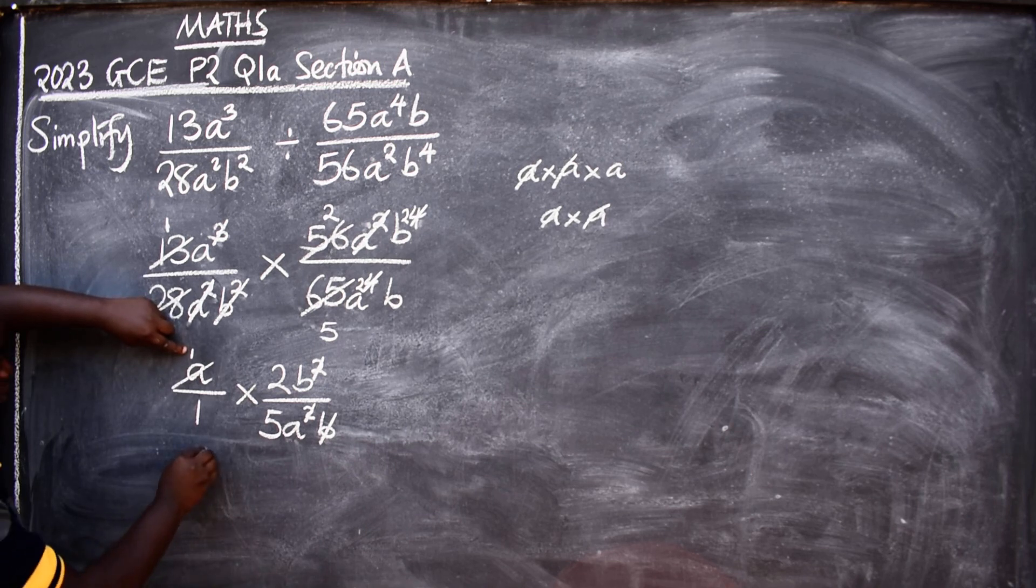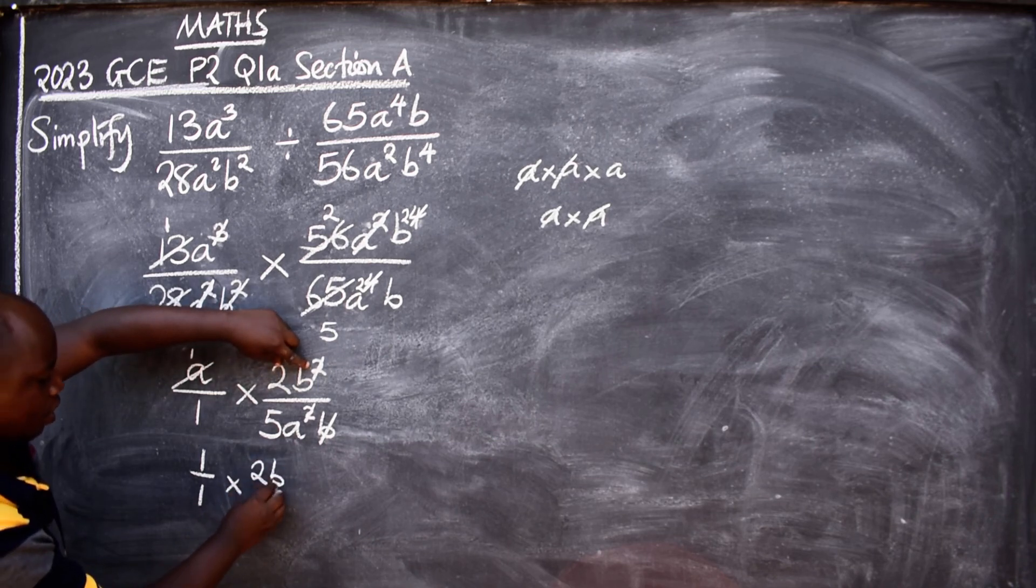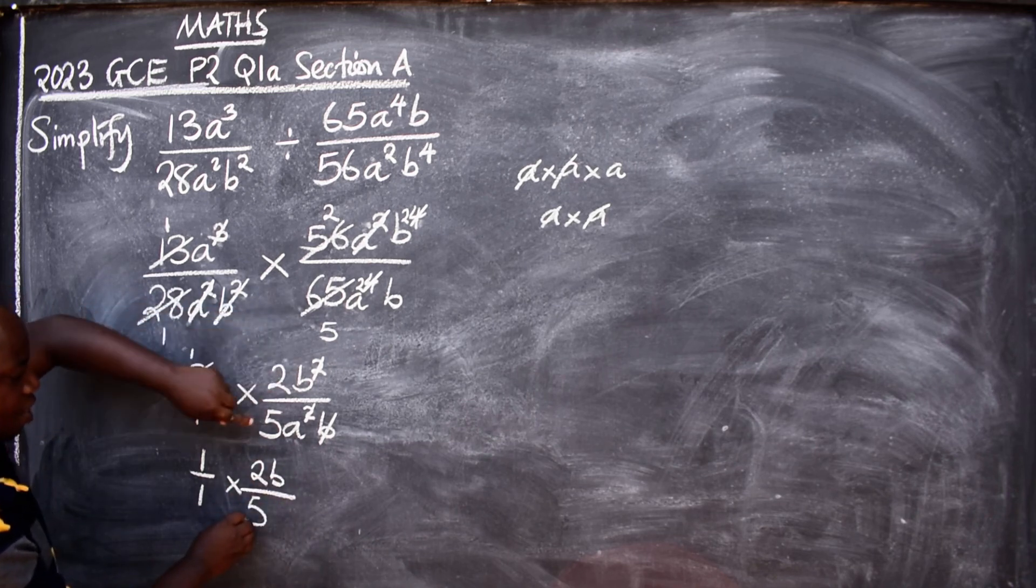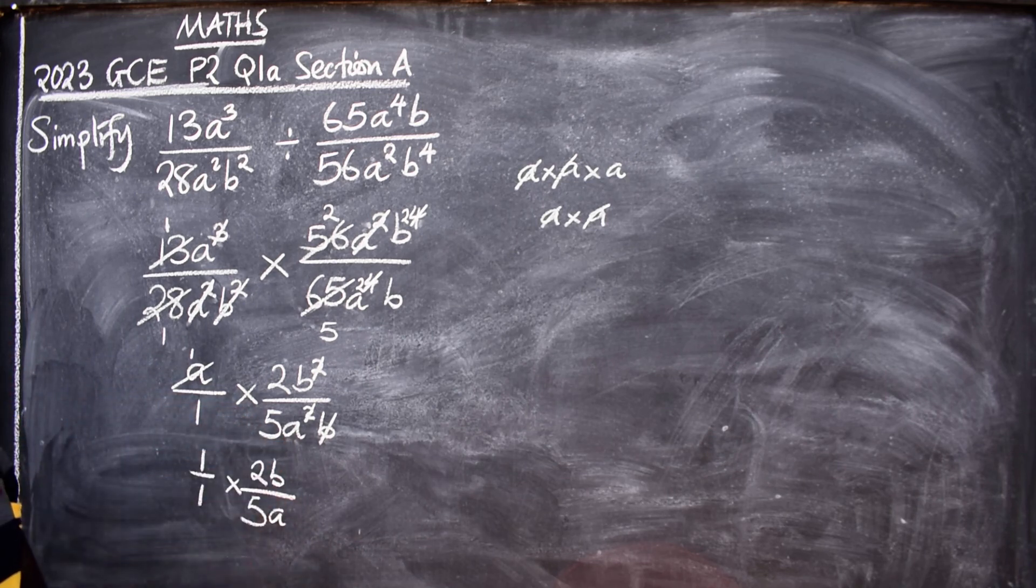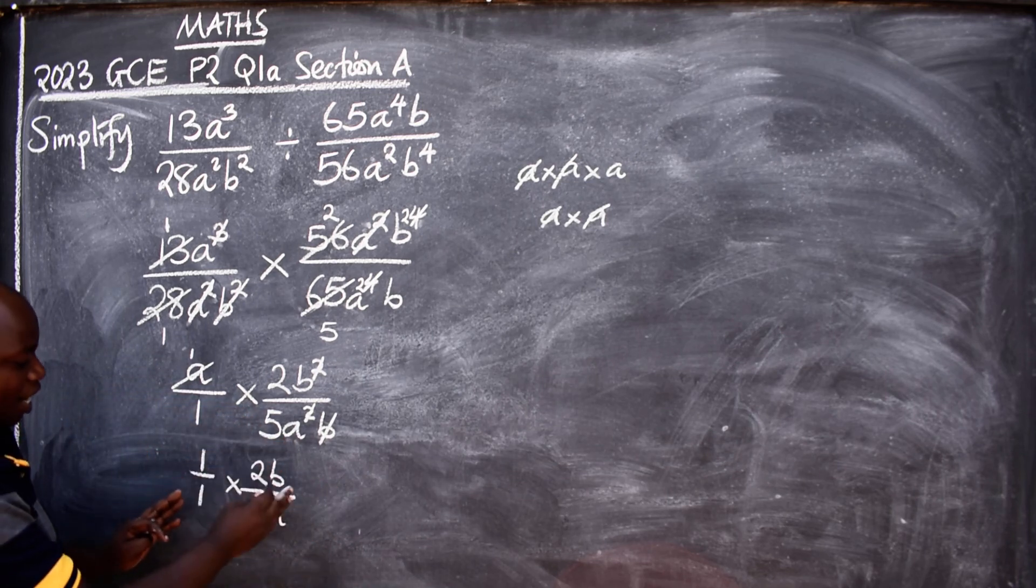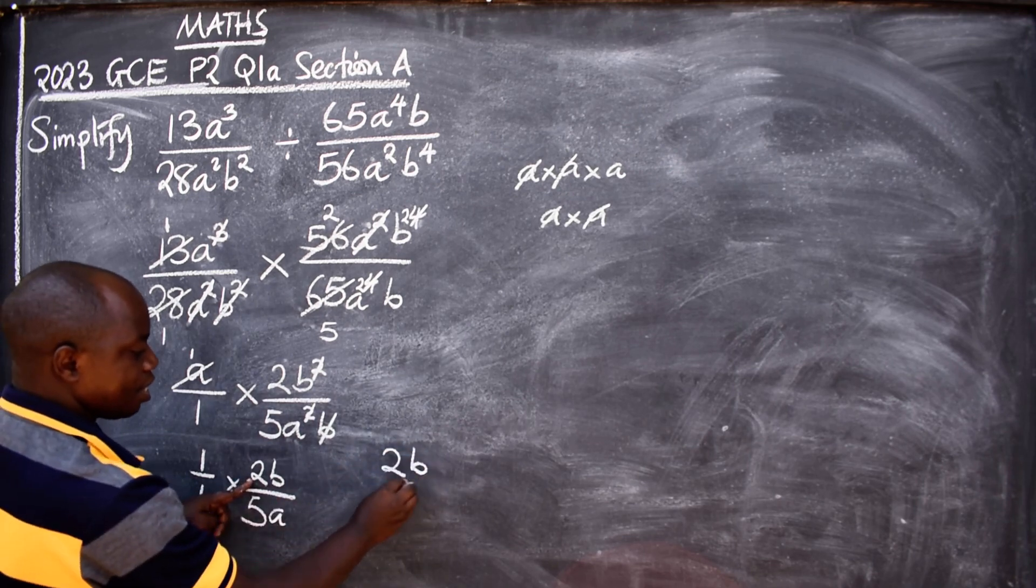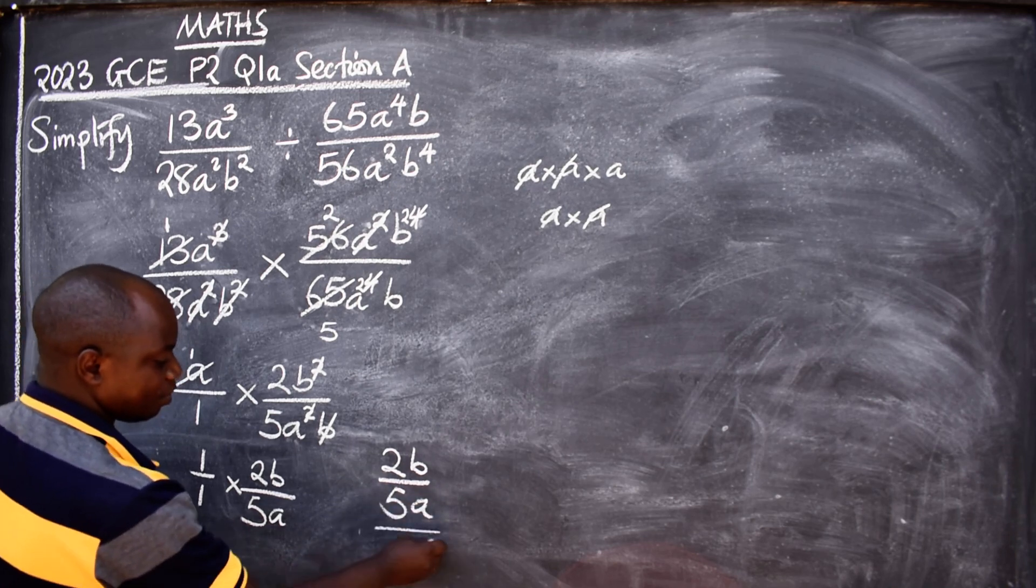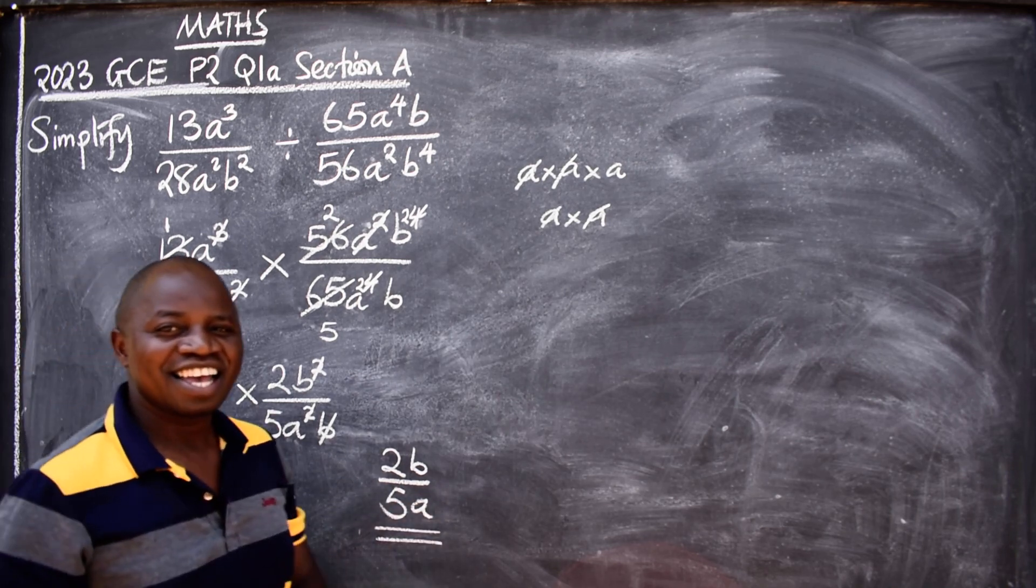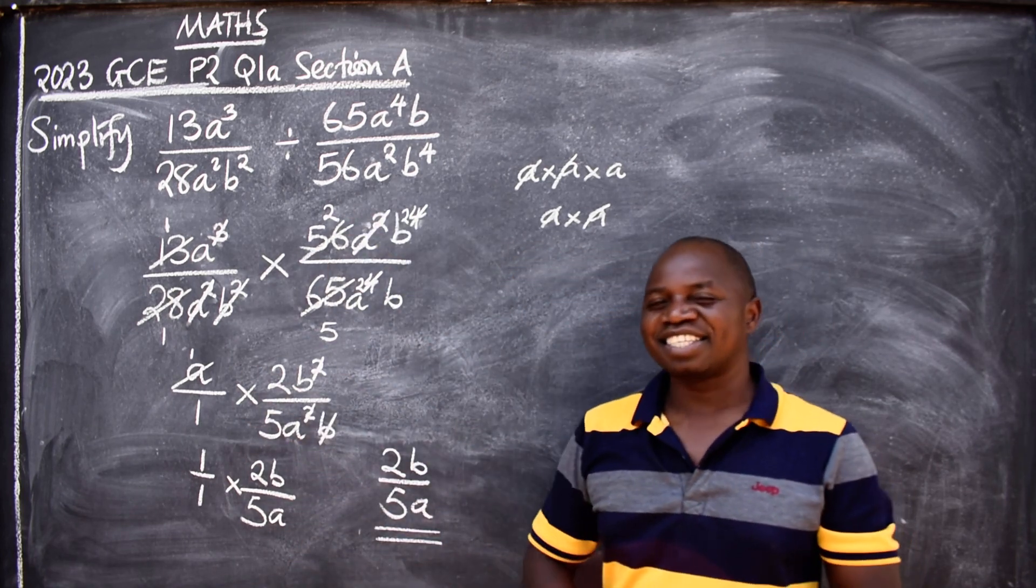I can now write what has remained. I've got 1 over 1 times 2B over 5A. My final answer: we just multiply. It will be 2B over 5A. This will be my final answer. That's the way you should be able to simplify such kind of questions.